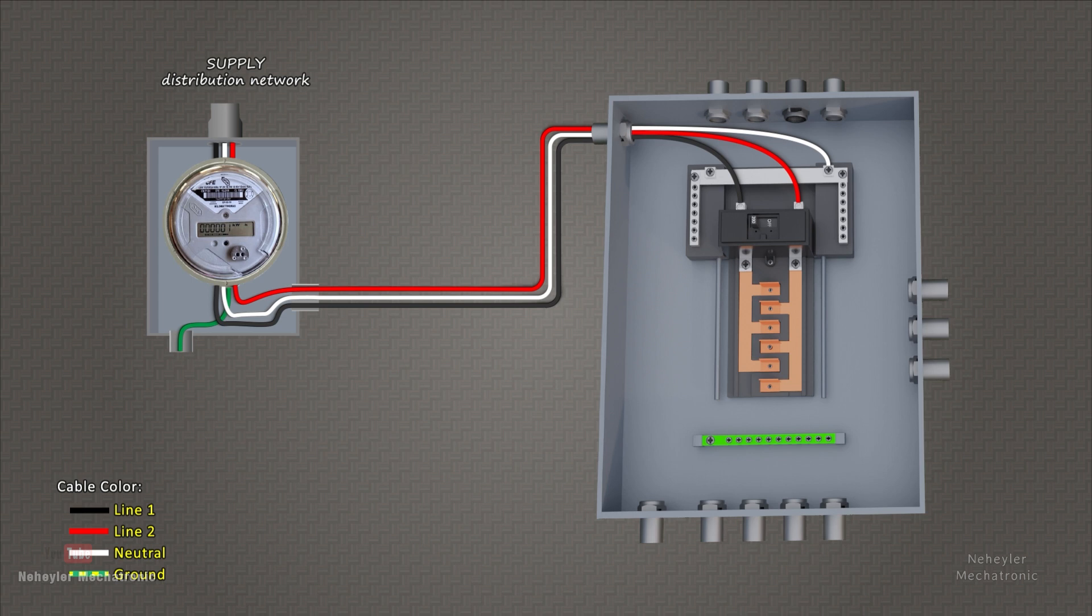If we place the meter on its base, we can already have power that reaches the main switch. Therefore, if we enable this switch by moving the lever, we would already have electrical energy in the metal sheets where the pickups or breakers will be mounted.